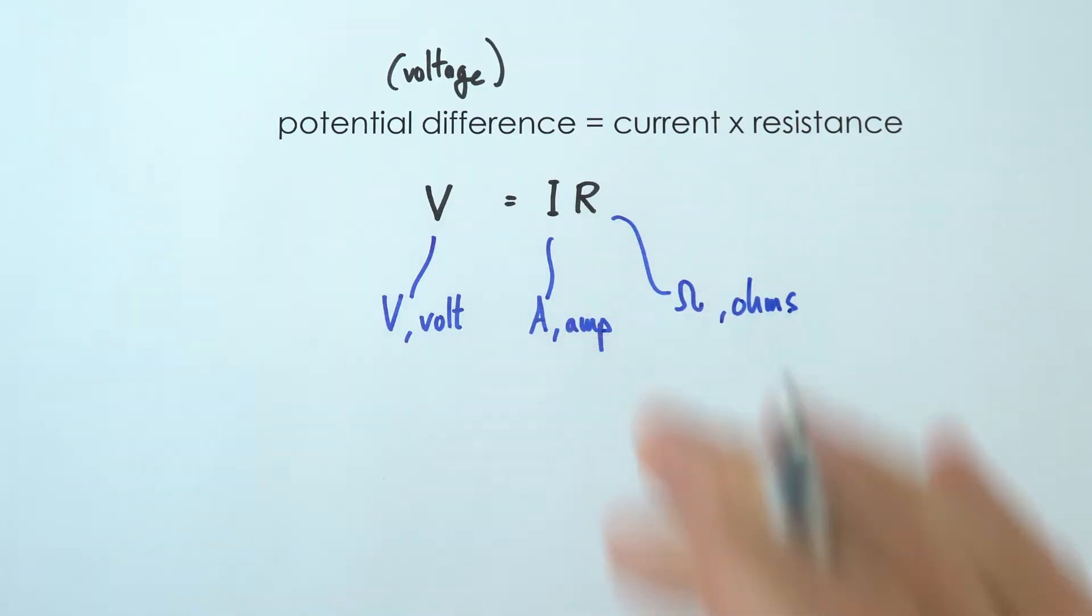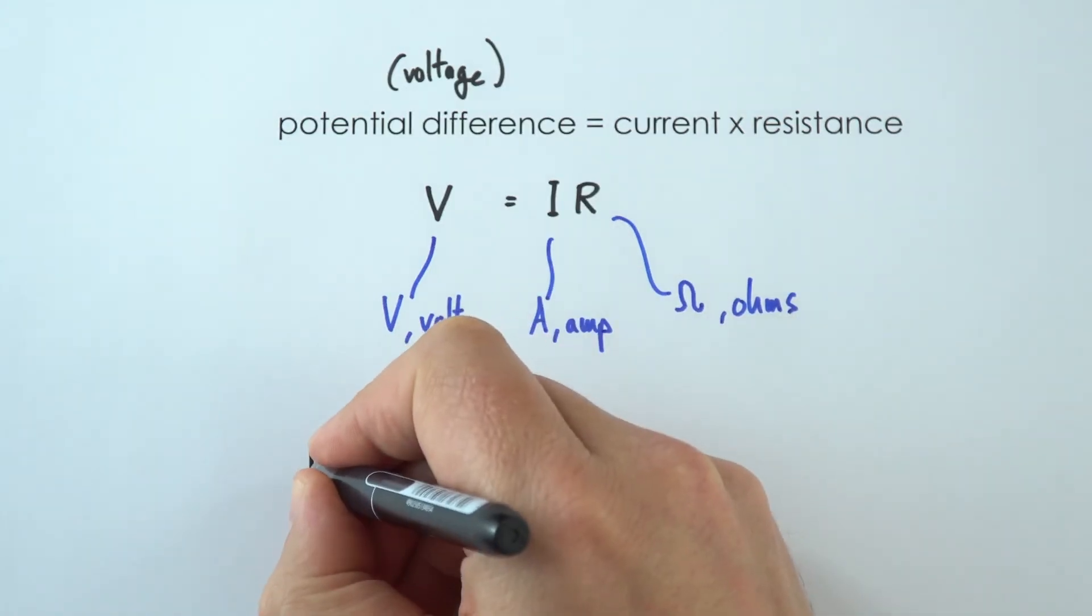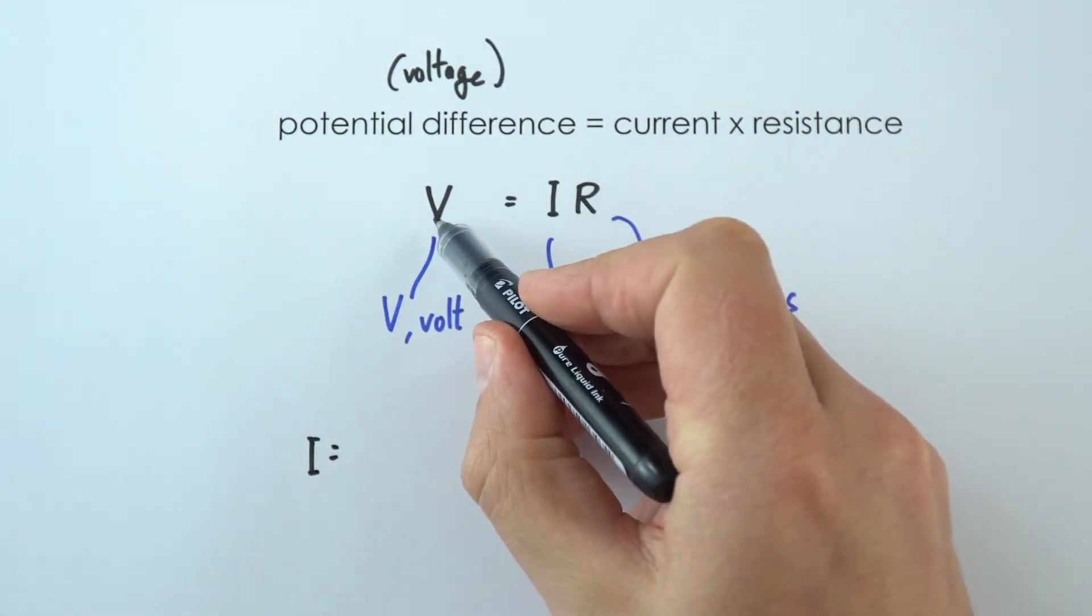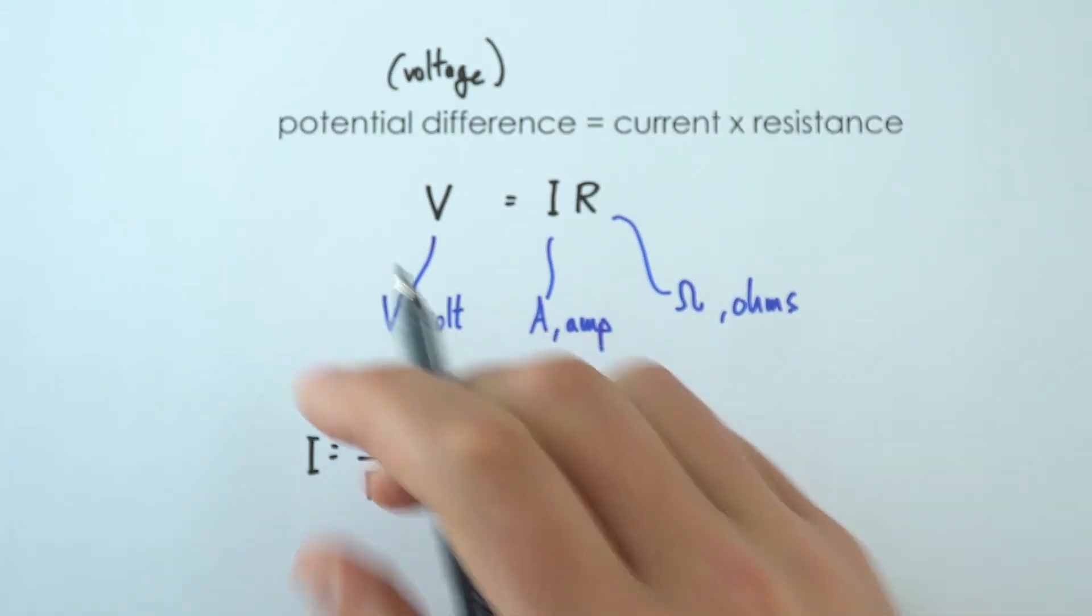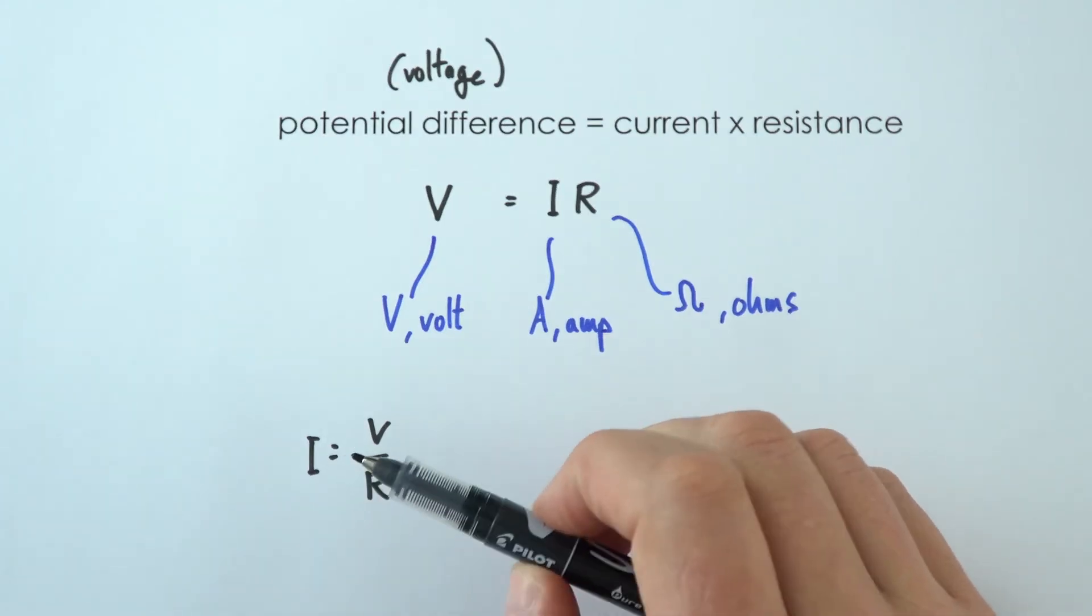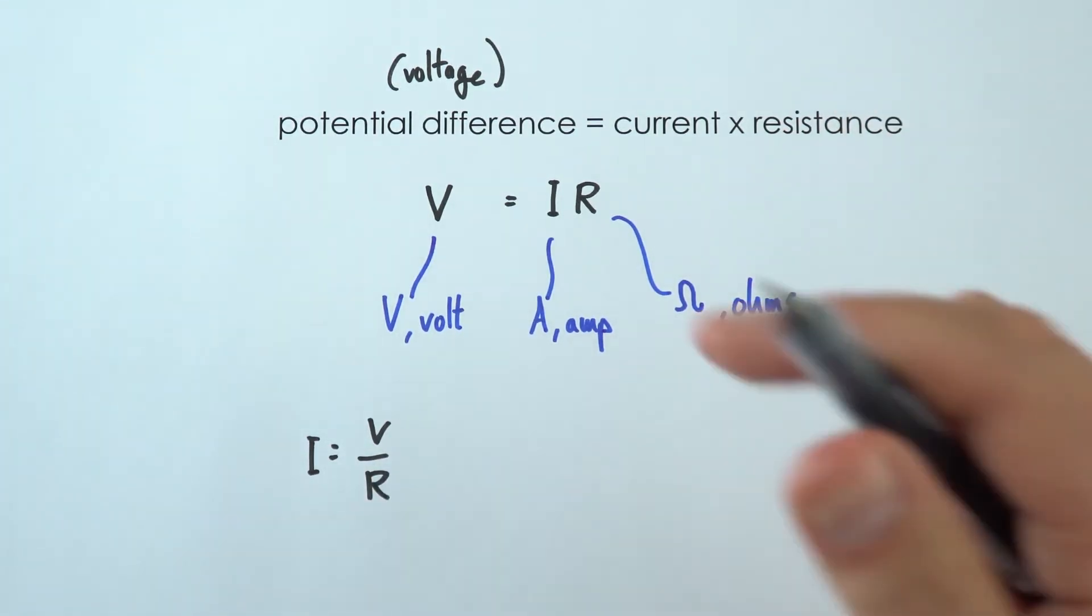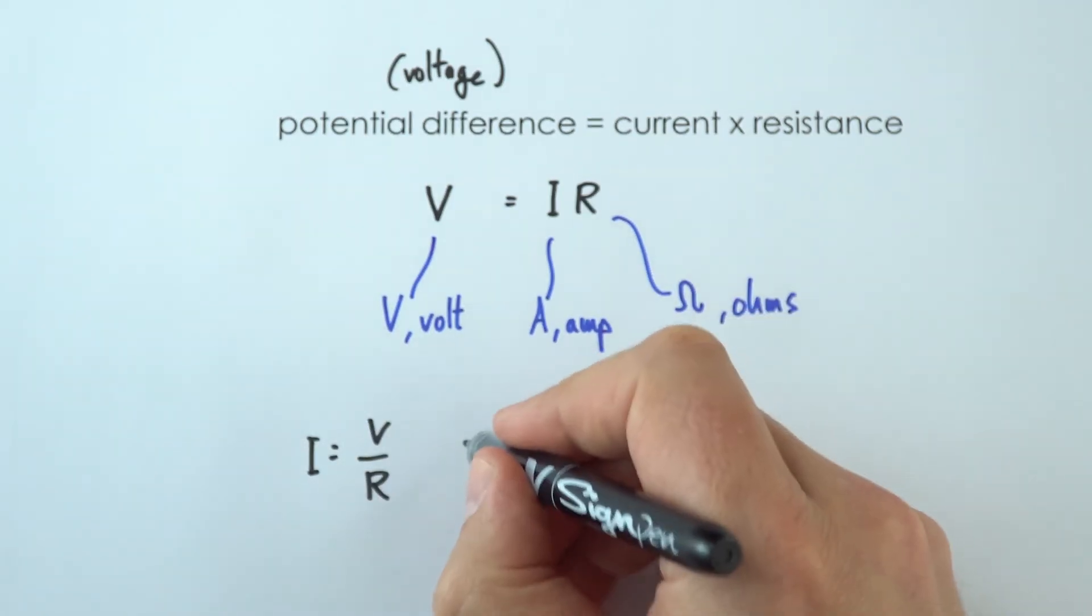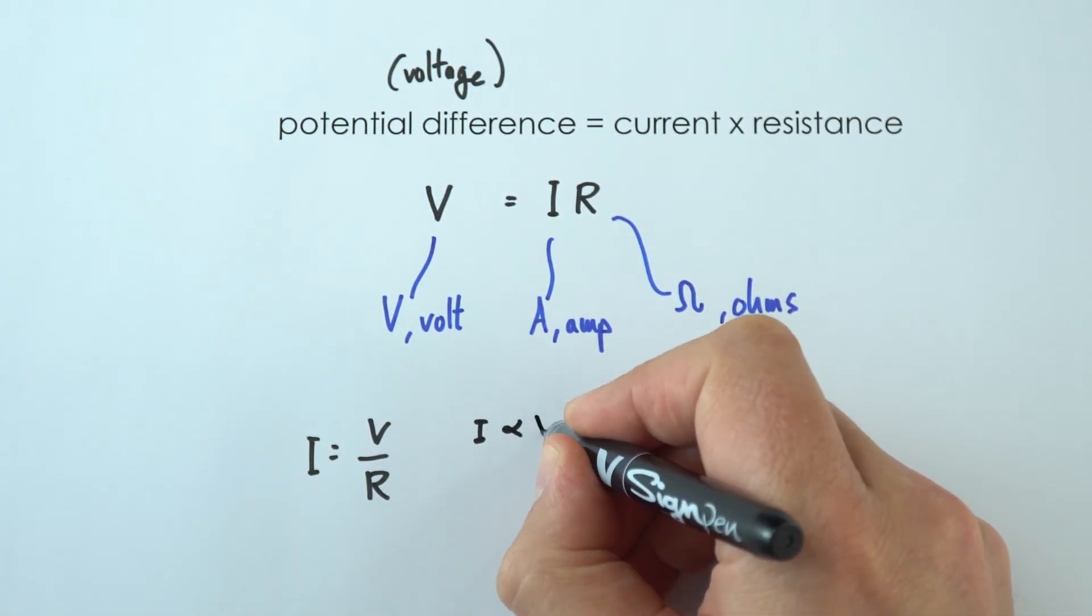Now that is a really useful form of the equation, but there's two other ways that we can write it. The first thing I'm going to do is make I the subject. So I is going to be equal to V divided by R. That's really important, because basically this tells us about the amount of current that's going to flow in the circuit. If you have a bigger potential difference, a bigger oomph pushing it forward, then that means you're going to have a bigger current. So what we can say there is that the current is going to be proportional to the potential difference.